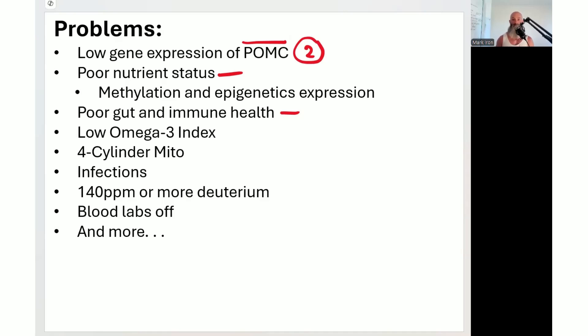I've spoken about this since 2018. You need to have a look at your omega index and get it to about 12%. That's going to lower inflammation and give you more power for the mitochondria. And we have to get rid of these four-cylinder beat-up mitochondria and replace them with brand new mitochondria.